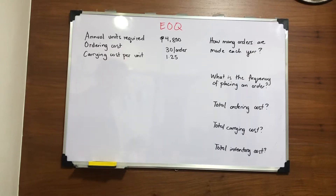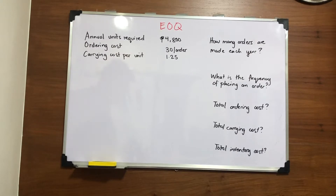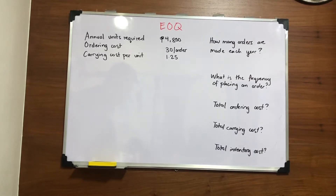For this, we will determine the economic order quantity and how to compute it and what is the purpose of this. The purpose of the economic order quantity, or EOQ, is that the purchase order which results in the minimum total inventory cost.